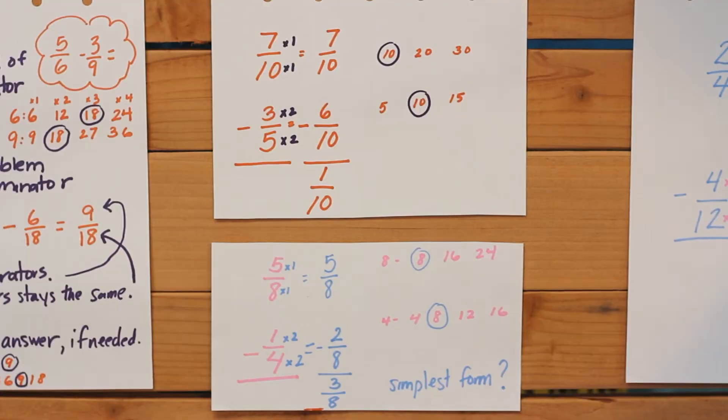Let's do another example. This time I have it done in vertical form. We have 7/10 minus 3/5.